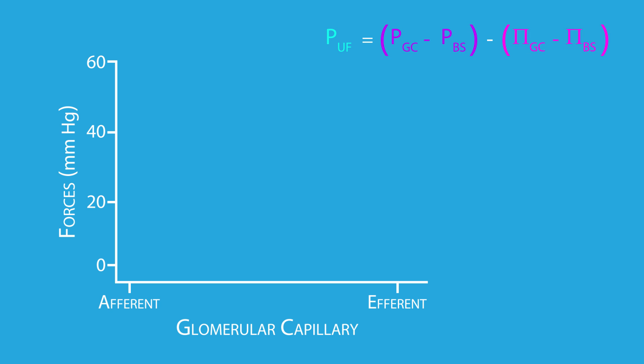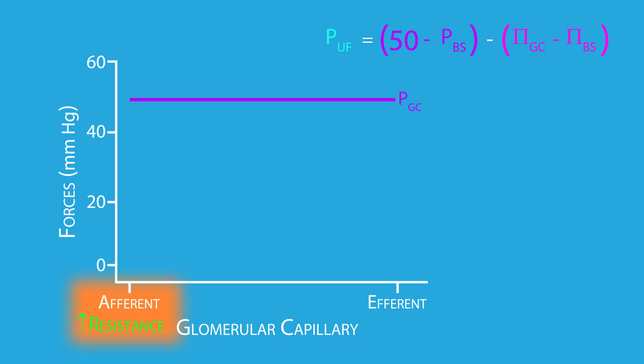The glomerular capillary hydrostatic pressure averages about 50 millimeters of mercury along the entire length of the glomerular capillary. The afferent and efferent arterioles help maintain this pressure by adjusting their resistances.